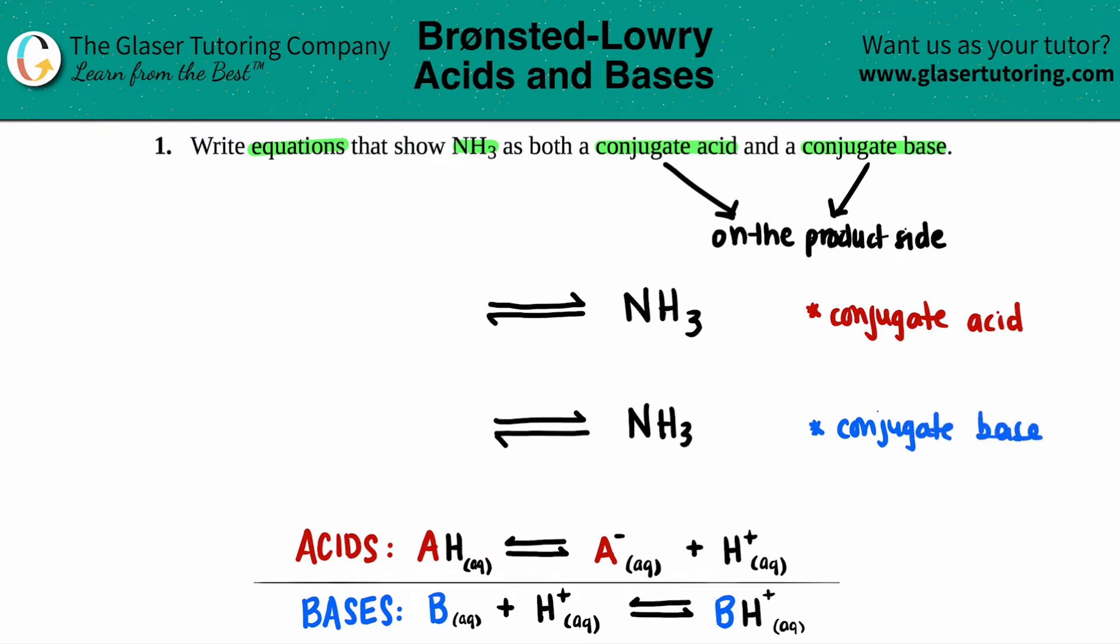Now, if you are a base on the product side, the beauty about acids and bases is that if you were a base on one side, you can't be a base on the other side. You're actually an acid. And the same thing with conjugate acids. If you are classified as an acid on the right side, you can't be an acid on the left side. You have to be a base. So they will crisscross.